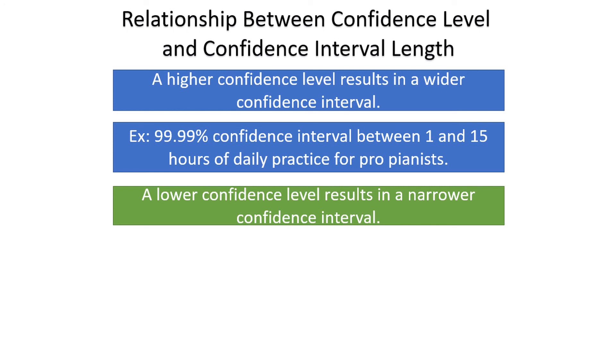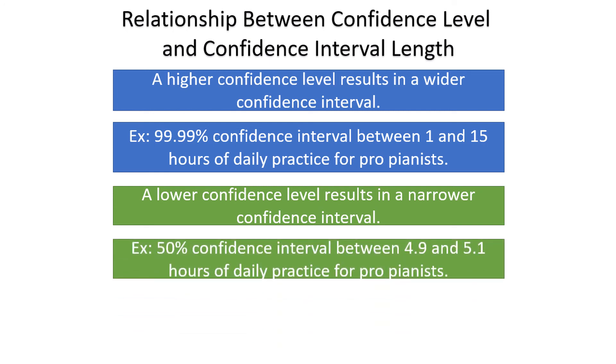Conversely, low levels of confidence can create narrow intervals. So if I have a 50% confidence level, I can make very specific claims, but they will be more likely to be incorrect. So I might be 50% confident that the interval between 4.9 and 5.1 contains the population mean practice time of professional pianists. Sure, my interval is narrow and specific, which is good, but there is a 50-50 chance that my interval does not contain the parameter that I'm estimating.